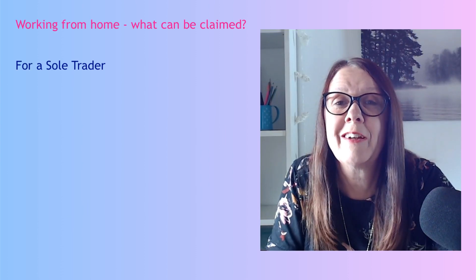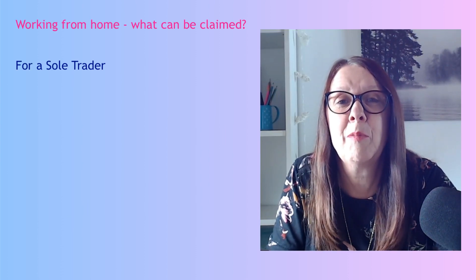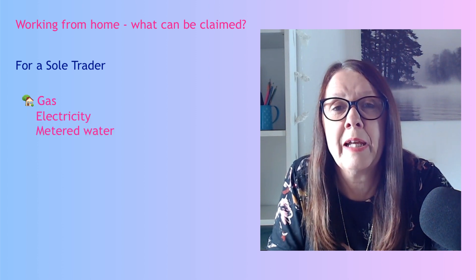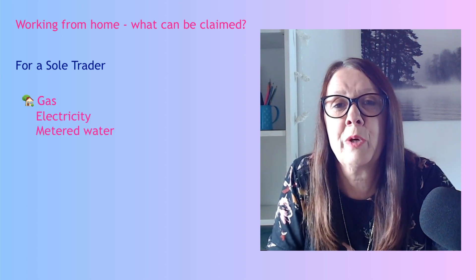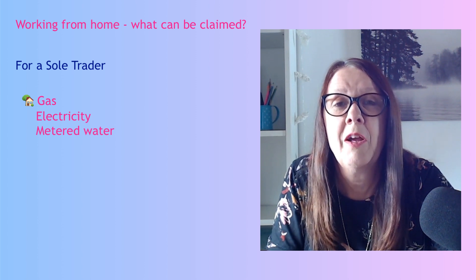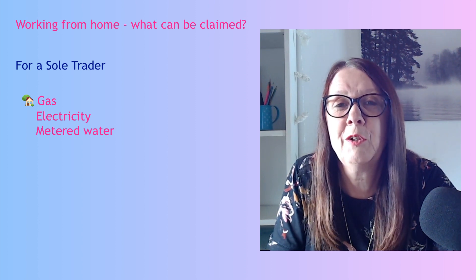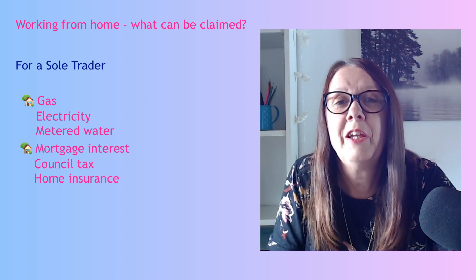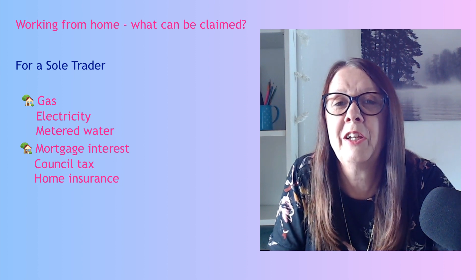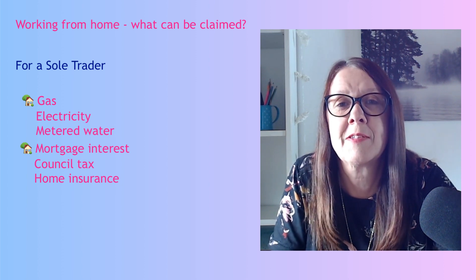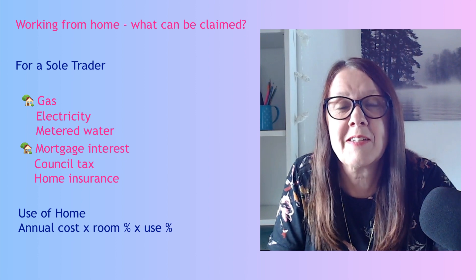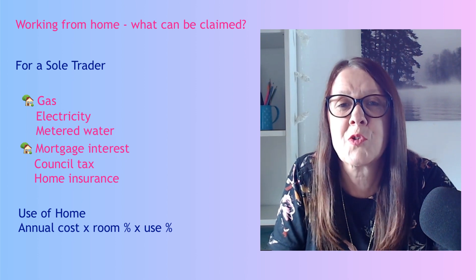For a sole trader, it's slightly better — you can also claim for other costs where there is a split between business and personal. So you can include mortgage interest, council tax, and home insurance in these costs. Here's an example for a sole trader.